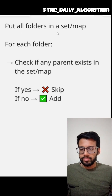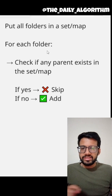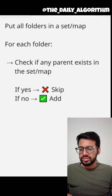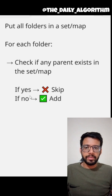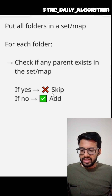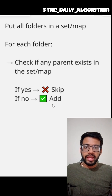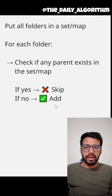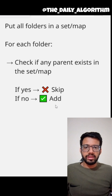The first intuition that comes to my mind is to store all these strings in a map or a set, and then to iterate on these individual strings and check if any of its parents are there in the map or the set. If that is the case, I'm not going to add this string in my output. If that string's parent is not there in the map, I'm going to add that string in my output.